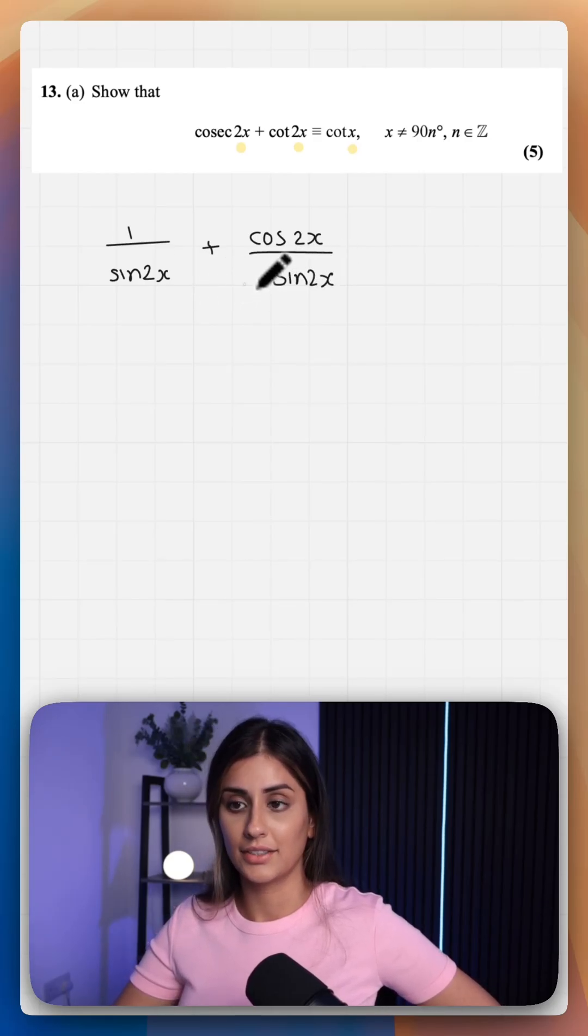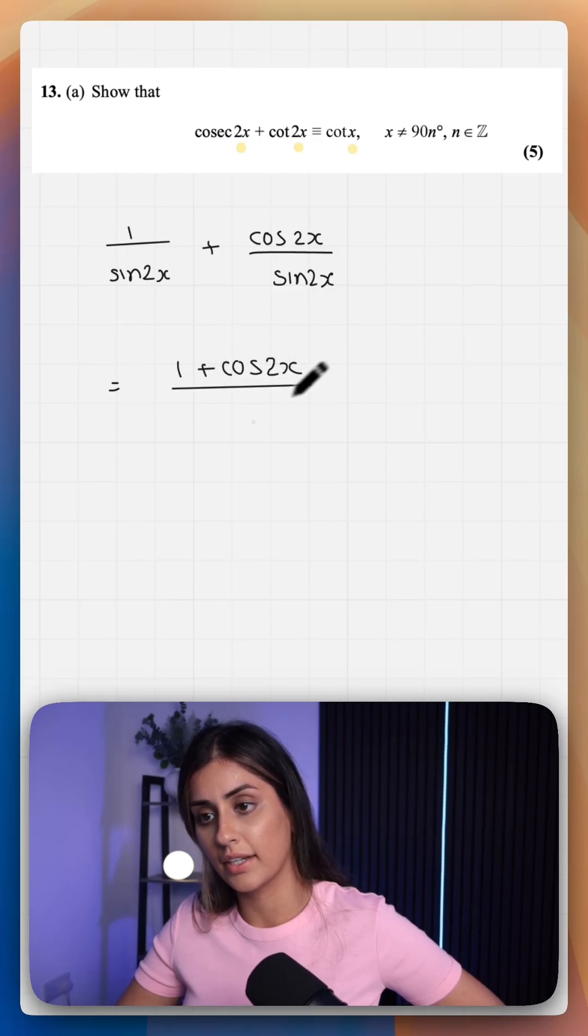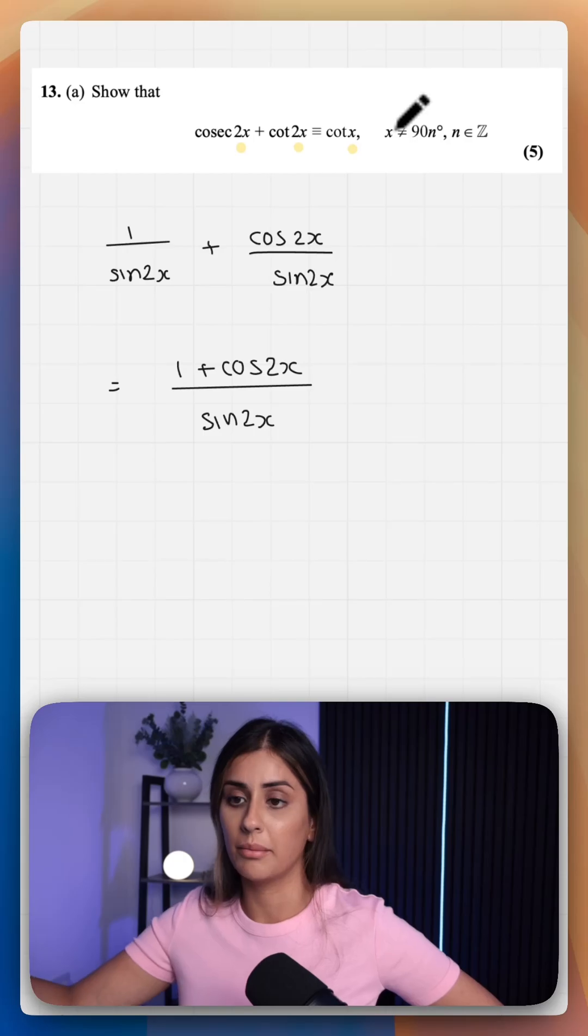These have a common denominator so we could group these together. 1 plus cos 2x all over sine 2x, which is what we wanted to do anyway because we have one term on the right.